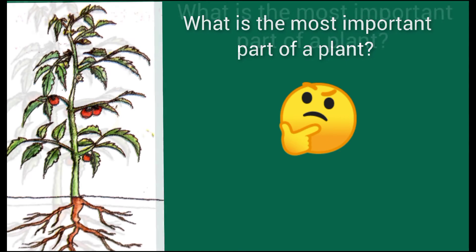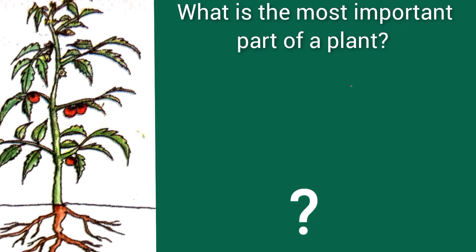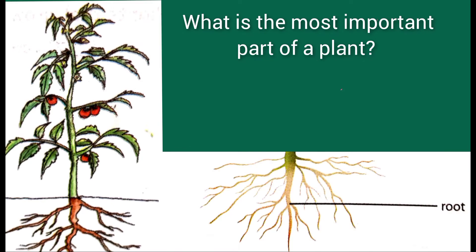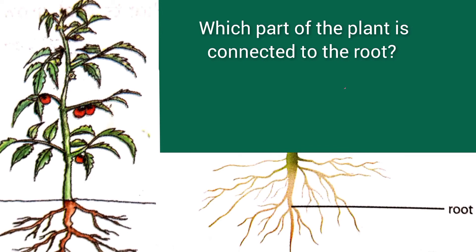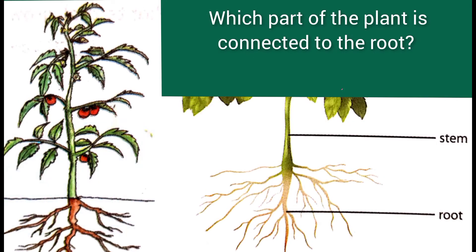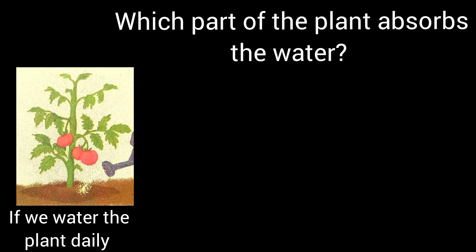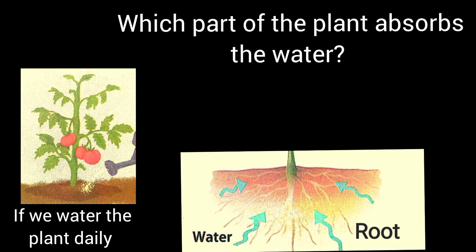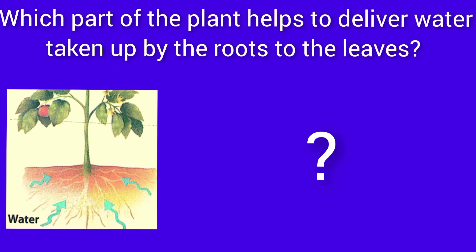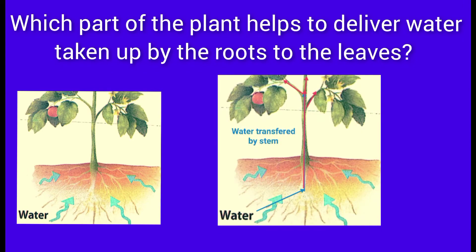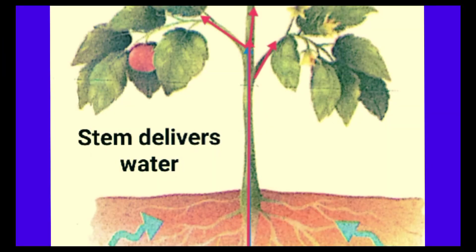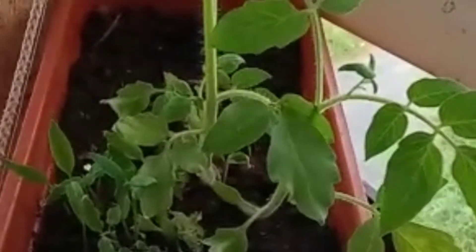Children, do you remember what is the most important part of a plant? That's right, it is the root. Which part of the plant is connected to the root? That's right, it is the stem. If we water the plant daily, which part absorbs the water? That's right, it is the root. And which part helps to deliver water to the leaves? That's right, it is the stem.